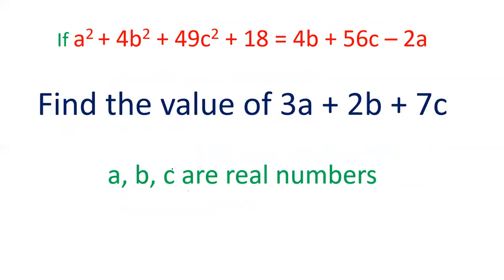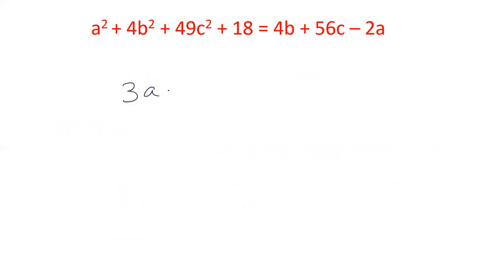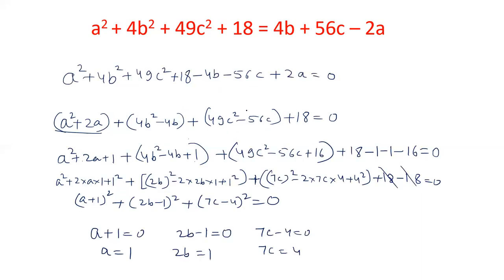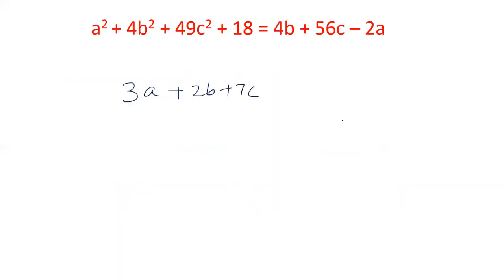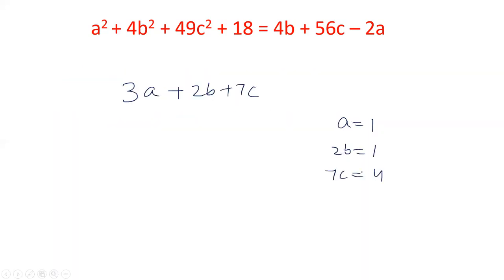Let's see what we have to calculate. We have to calculate the value of 3a + 2b + 7c. We have just now calculated the value of a = 1, 2b = 1, and 7c = 4. Now put the values here. The value of a is 1, the value of 2b is 1, and the value of 7c is 4. 3 plus 1 plus 4, and the sum will be 8. So the value of 3a + 2b + 7c is 8.